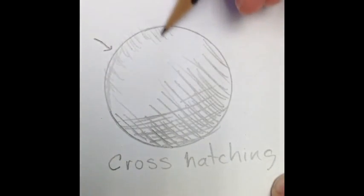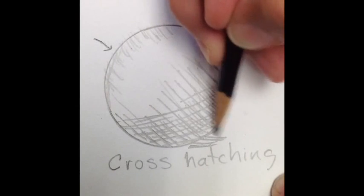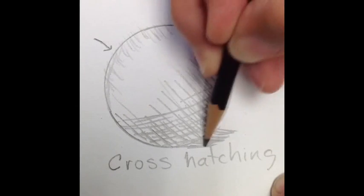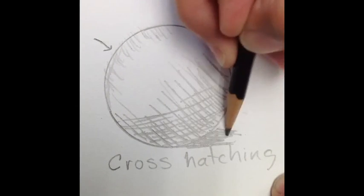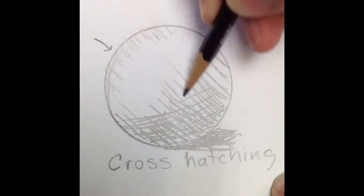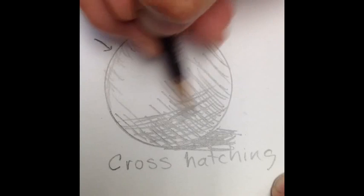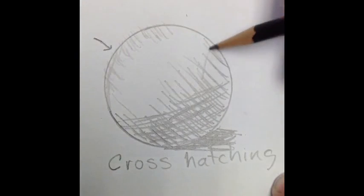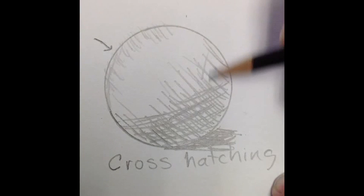It's a series of parallel lines that cross each other. Don't forget to add your cast shadow, the shadow that the sphere is casting down onto the table. Pause your video and finish your cross-hatching technique.